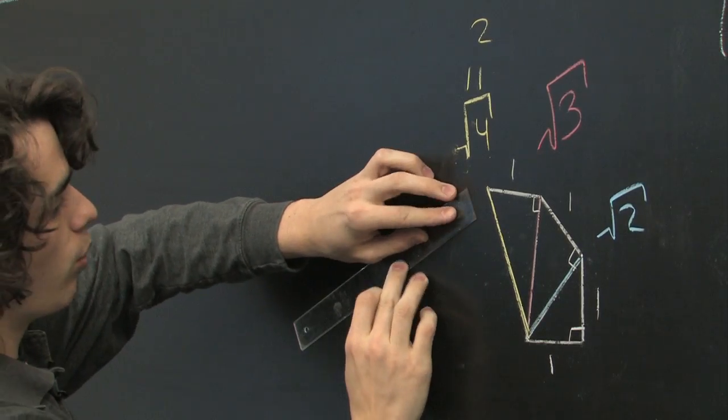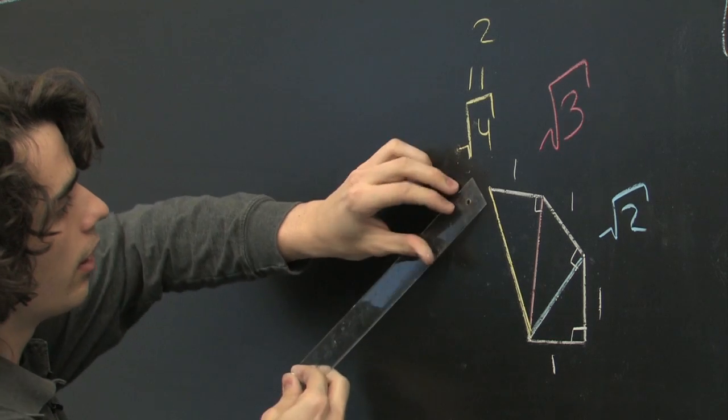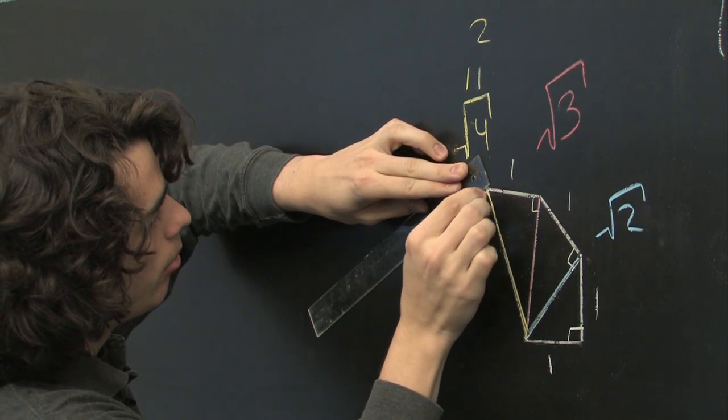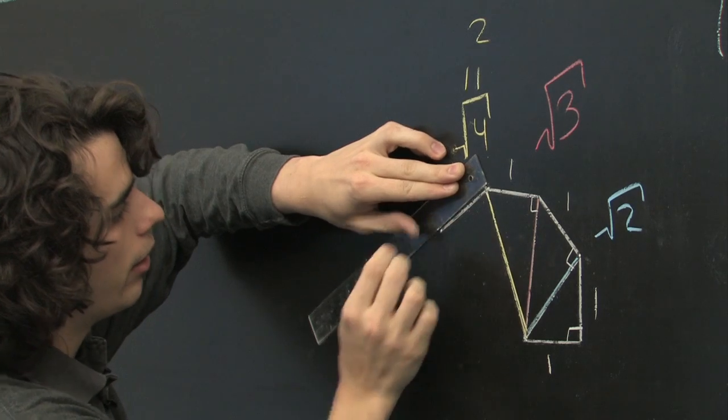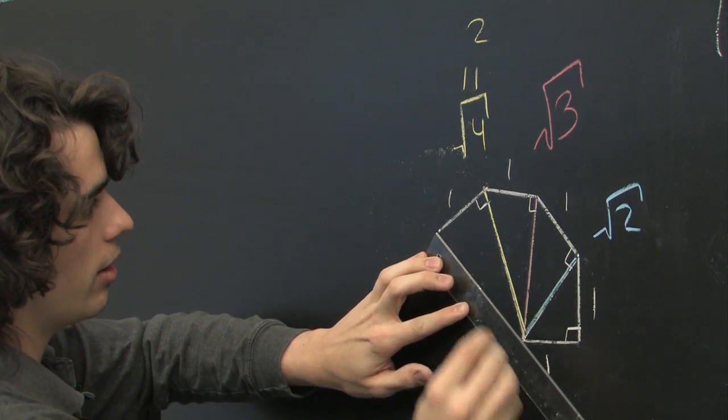Let's repeat the process one more time so you get a good idea of what it looks like in the end. So make a right angle, measure out one unit, connect these lines.